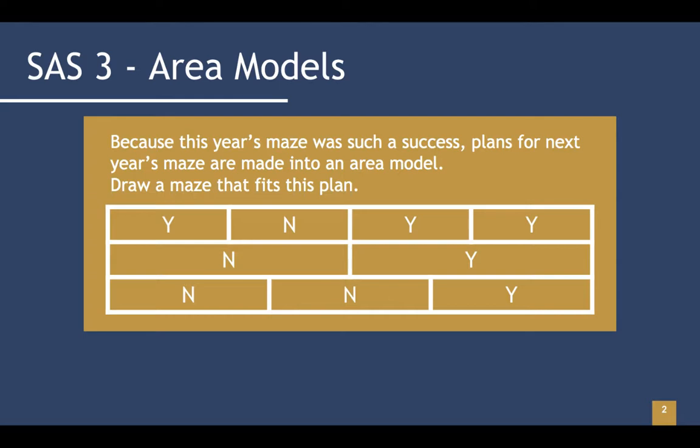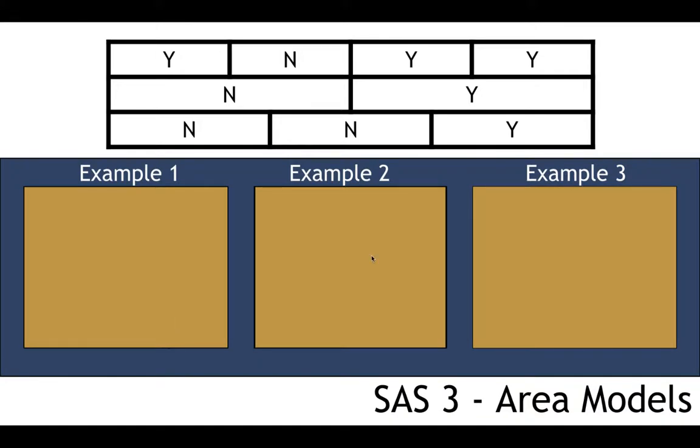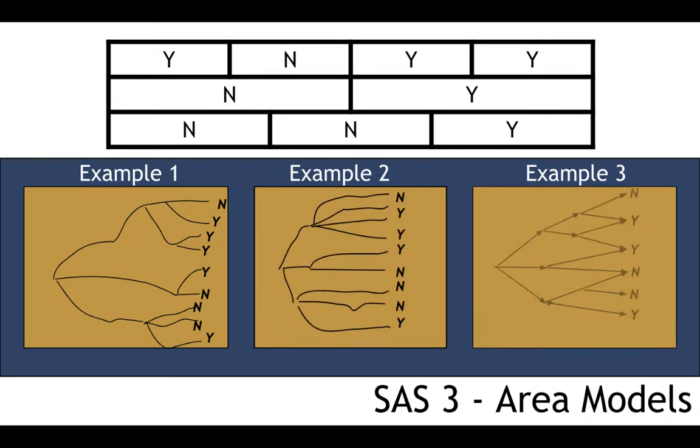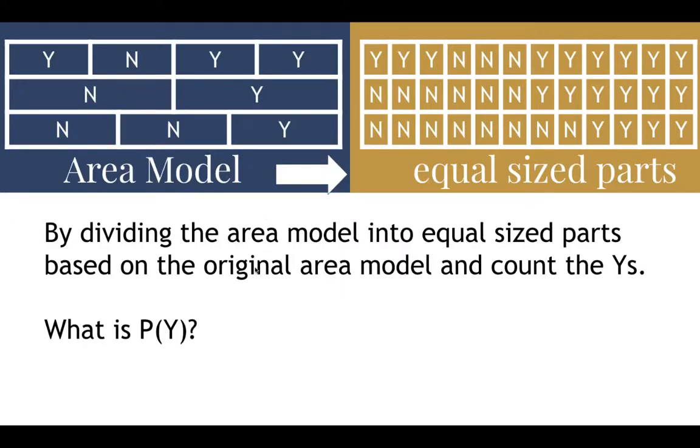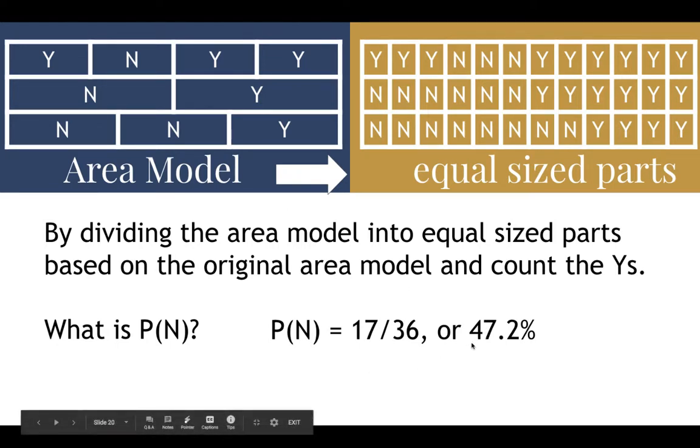Because this year's maze was such a success, plans for next year's maze are made into an area model. Draw a maze that fits this plan. We can give all kinds of examples. It doesn't really matter. There's one. Here's another example, and then there's another example. So you can look at this, stop and study and see how that works. There are several ways to look at it. Just understand that as long as this fits, it doesn't matter what it looks like. By dividing the area model into equal size parts based on the original area model and you count the Y's, you can find P of Y. P of Y is 19/36 or 52.8%. P of N is 17/36 or 47.2%.